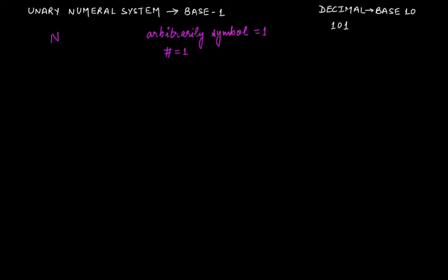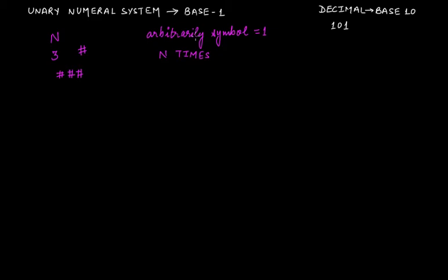So if you have to write a natural number n using any arbitrary symbol, you repeat that symbol n times. For example, if we have number three and we use the hash symbol to represent it, we write the hash symbol three times. That is what the unary numeral system is about — base one, where you repeat the symbol n times to represent any natural number n.